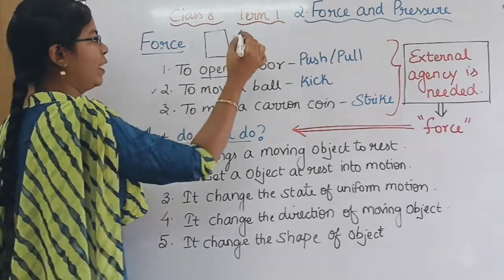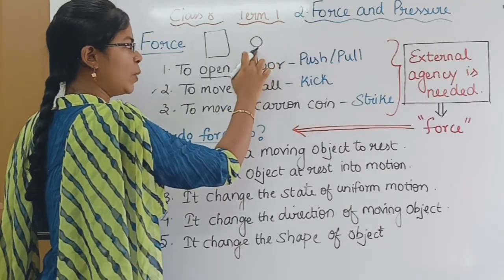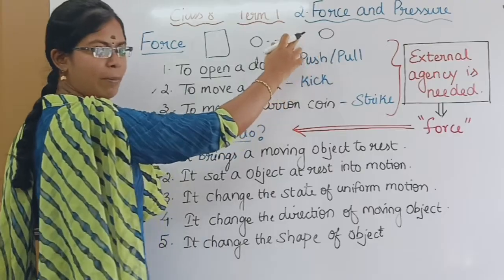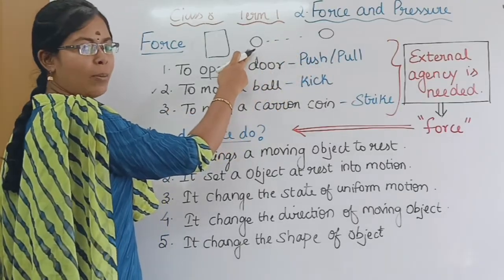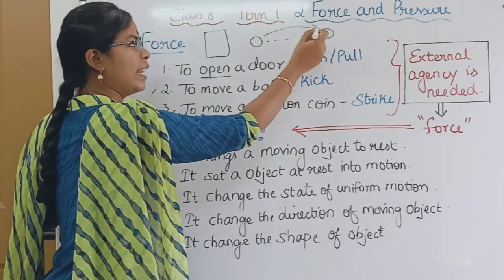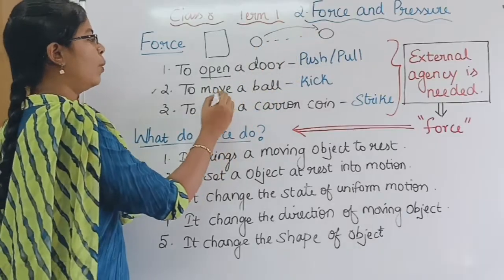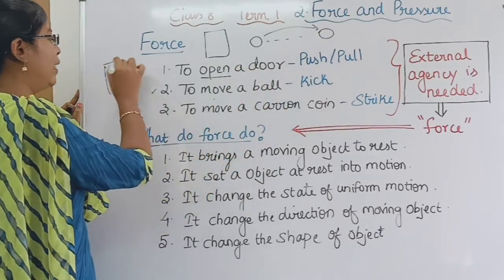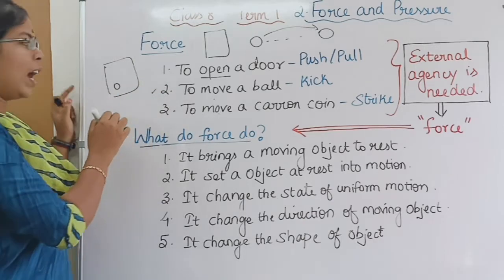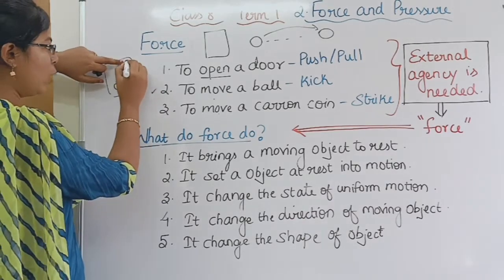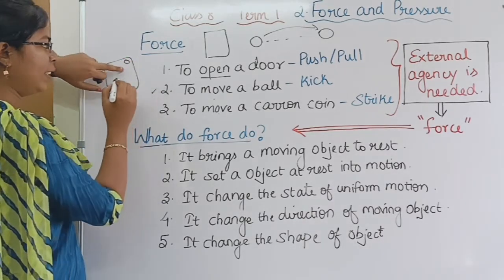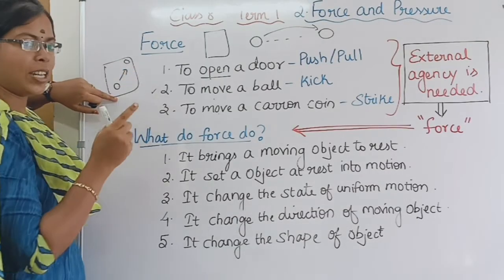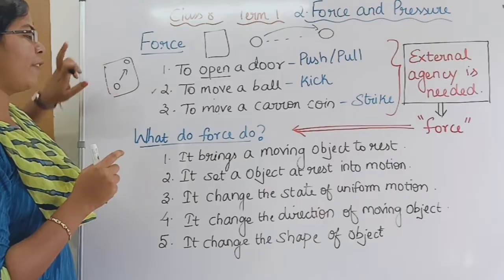Second example: there is a ball. What do you want to do from a certain distance? If you want to kick the ball, you can kick the ball. In a carom board, there is a coin. You can put the coin in the hole. If you want to strike the coin, you can move the coin.